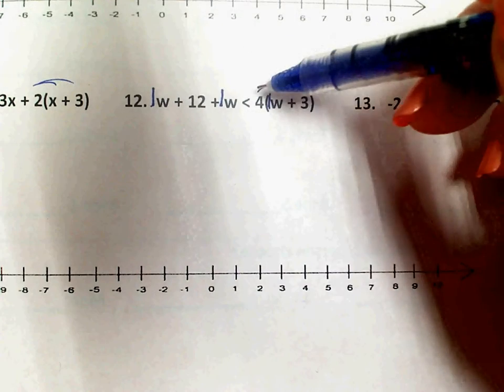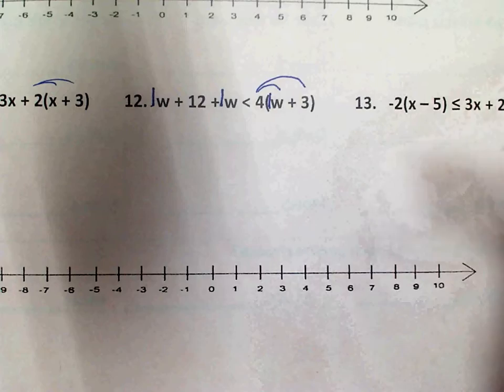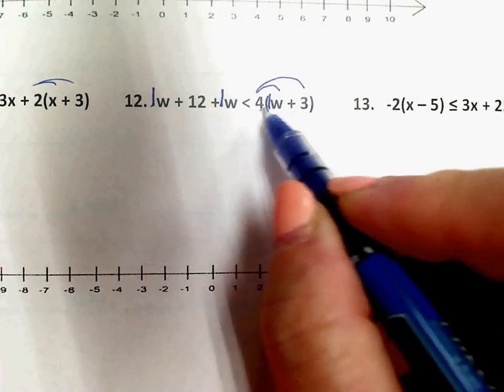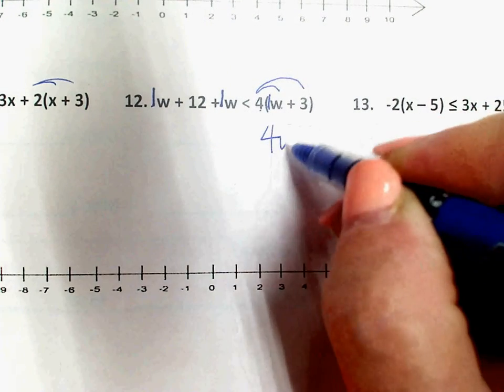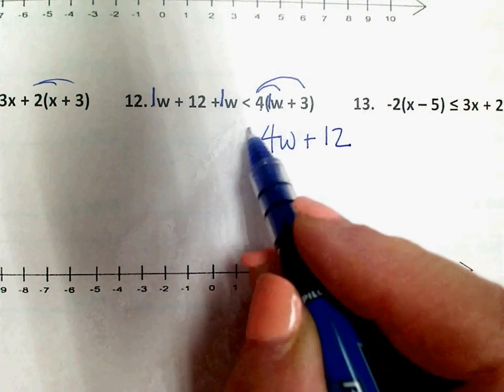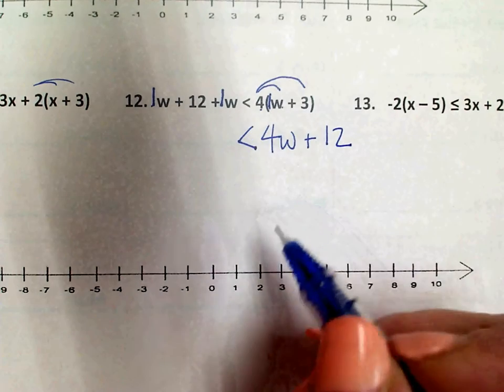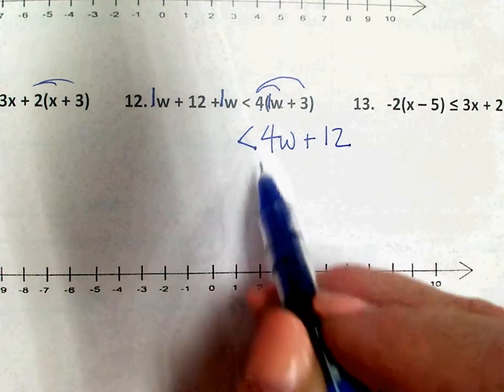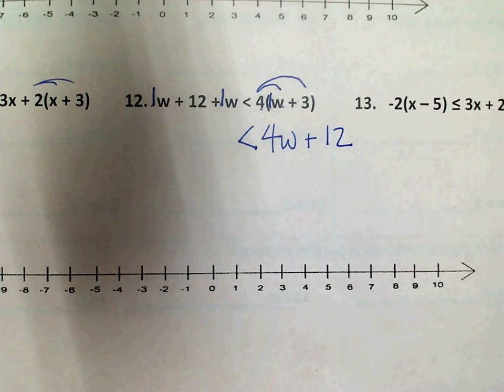And then I also see parentheses that I need to get rid of. So on this side, 4 times W, and 4 times 3. Don't forget that this is a less than sign. It's a real common mistake to accidentally write equals because we're so used to doing that.